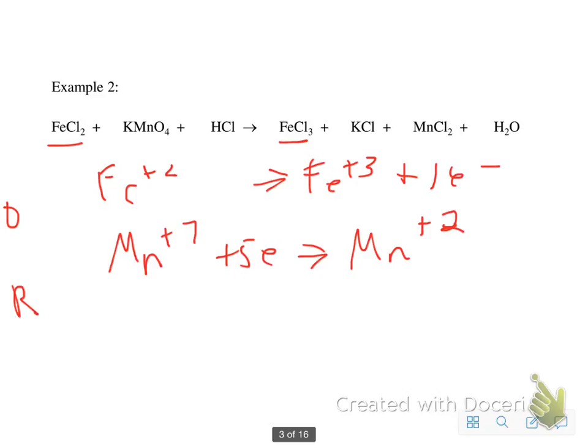Now I have 5 electrons being gained here. Manganese, only 1 here. So I've got to multiply these times 5. Bring up my coefficients. 5 for my Fe's. My manganese looks good. My iron is good.